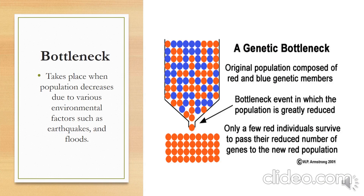A bottleneck is an example of genetic drift. It takes place when a population decreases due to various environmental factors such as earthquakes and floods. Here in the illustration, the original population is composed of red and blue genetic members. In the bottleneck event, where the population is greatly reduced, only a few red individuals survive to pass on a reduced number of genes to the new red population.